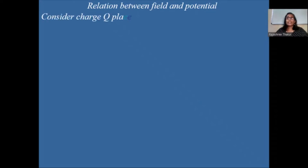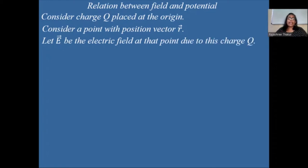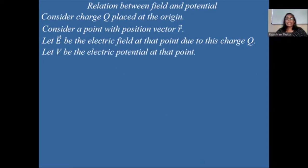Let us understand the relation between field and potential. Consider a charge Q — capital Q — placed at the origin. This charge can be a charge distribution also. Consider a point with position vector R. Let E be the electric field at that point due to this charge Q, and let V be the electric potential at that point.